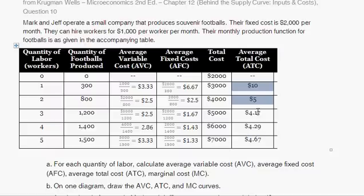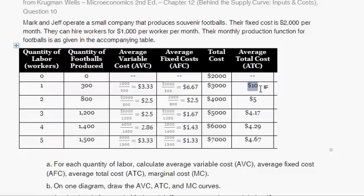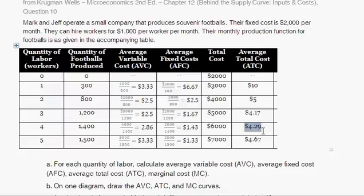Notice how average total cost changes as we increase football production. At low levels, production costs $10 per football. As output increases to 800, average cost is cut roughly in half. Average cost continues to decrease until about 1,200 footballs, then as production continues to increase to 1,500, the average total cost starts to increase again.